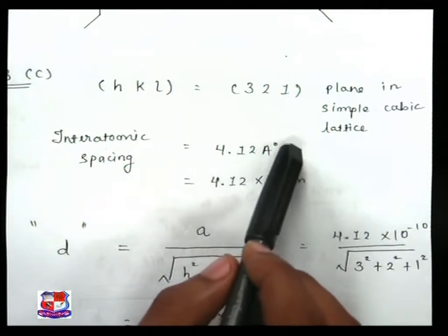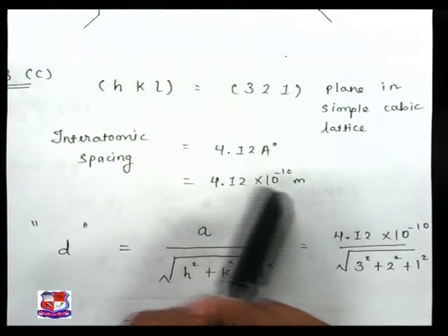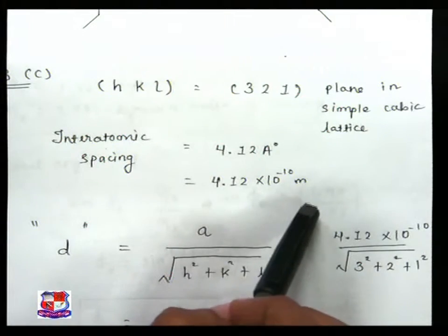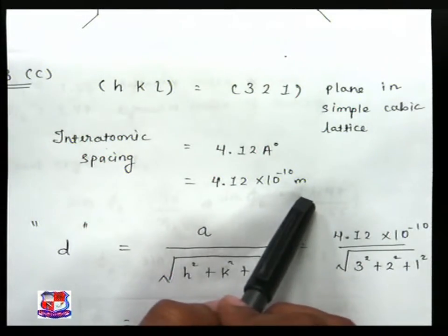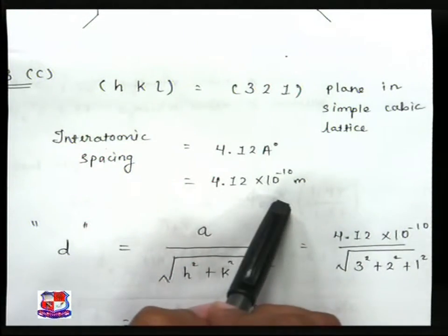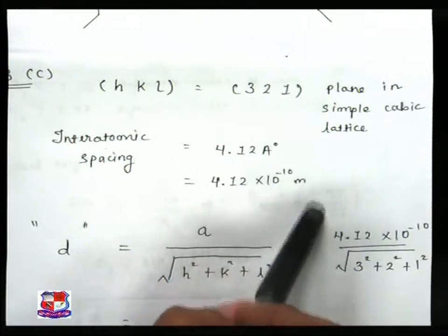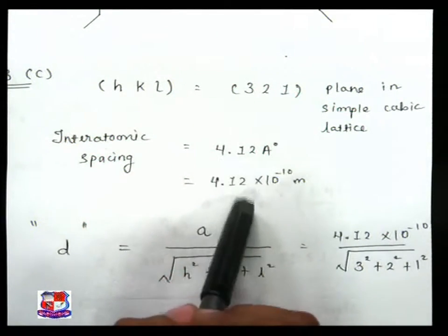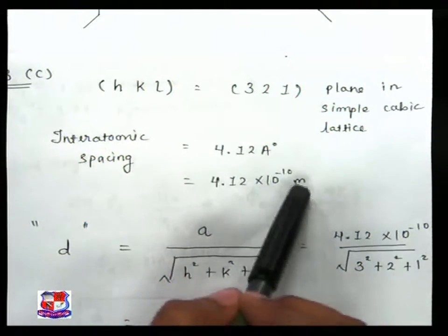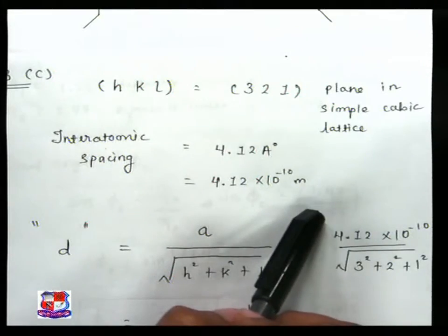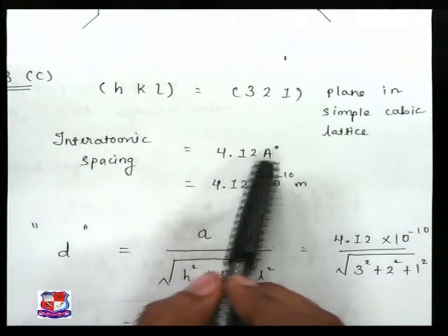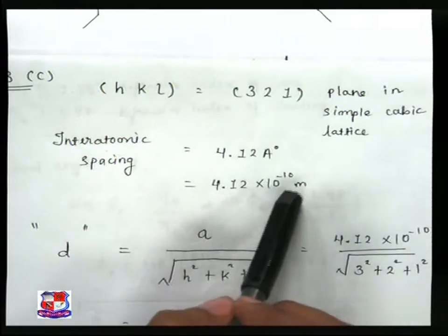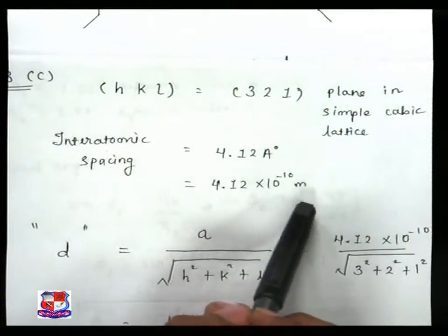If we want to convert this angstrom into meter, it will be 4.12 into 10 raise to minus 10 meter. That means 1 angstrom represents 10 raise to minus 10 meter. So 4.12 angstrom is equal to 4.12 into 10 raise to minus 10 meter.